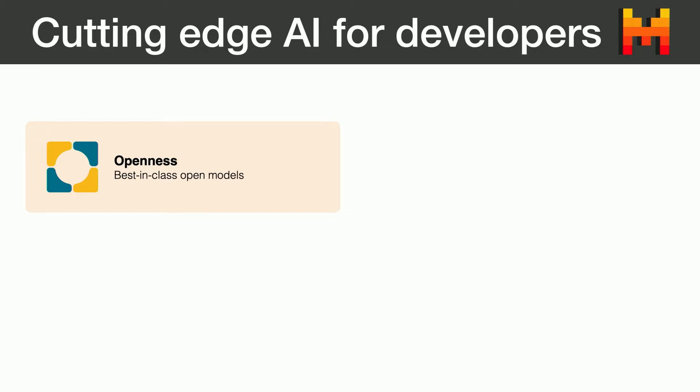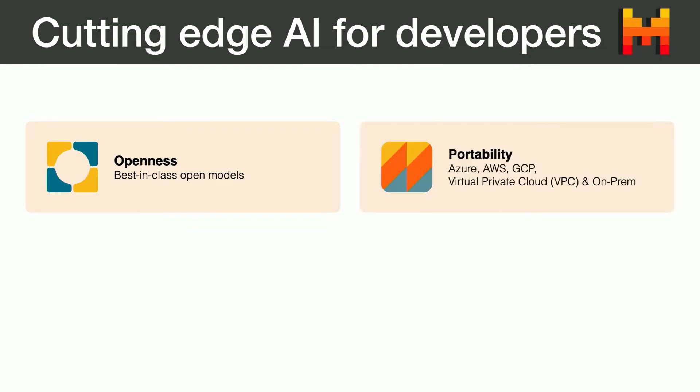Our mission is to bring frontier AI into everyone's hands, and we specifically focus on building cutting-edge AI for developers. We have certain principles behind how we go about training models and releasing them. The first is openness — we want to train best-in-class open models and release them for the open source community. We want our models to be portable. All our models are available on Azure, AWS, GCP, virtual private cloud, and also they can be deployed on-prem, which means you can license the model weights and use them on your own servers with full control over security and privacy of your data.